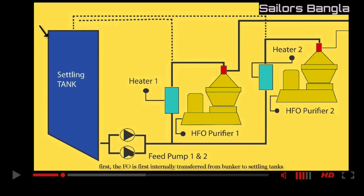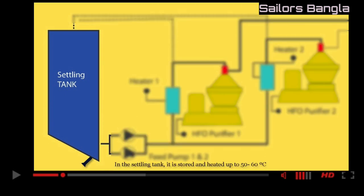First, the fuel oil is internally transferred from bunker to settling tanks. In the settling tank, it is stored and heated up to 50 to 60 degrees Celsius to separate it from water, which is drained off from the bottom.